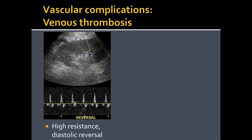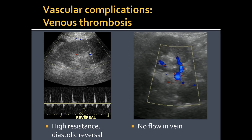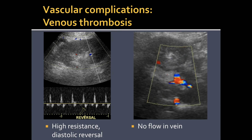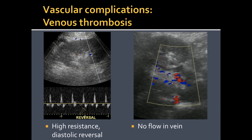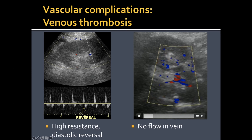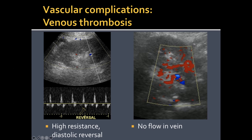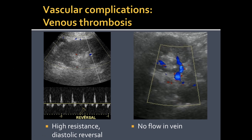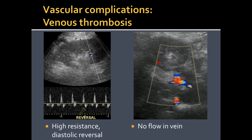With venous thrombosis, we typically see very high resistance waveforms — zero end-diastolic velocity, a resistive index of 100%, and often diastolic reversal. When you see this waveform, carefully examine the main renal vein at the hilum. If you see only a single color Doppler vessel — the main renal artery with forward systolic and reverse diastolic flow — and a hypoechoic region next to it representing a thrombosed vein, this is an emergency requiring immediate contact with the transplant surgeons.